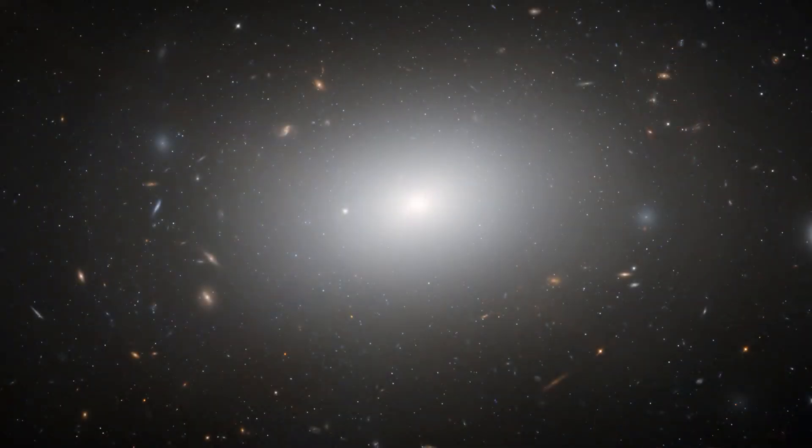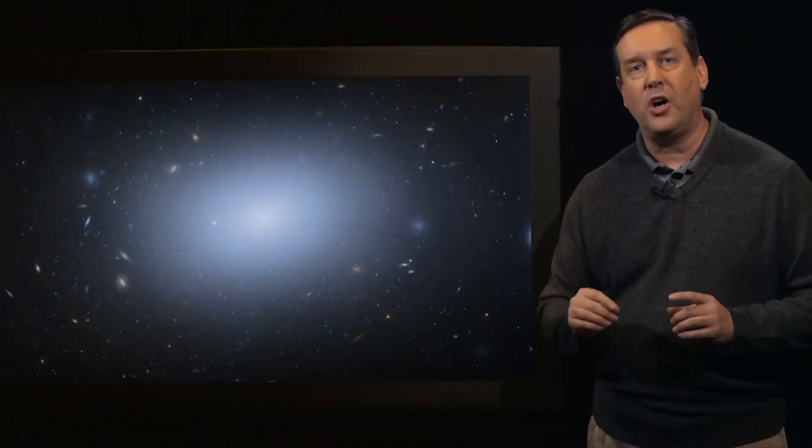A galaxy that is entirely this rounded shape is called an elliptical galaxy. Elliptical galaxies are dominated by stars and generally have very little gas and dust.